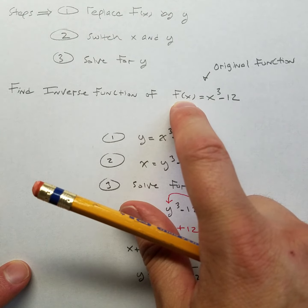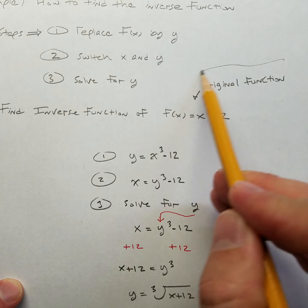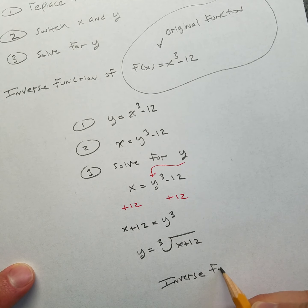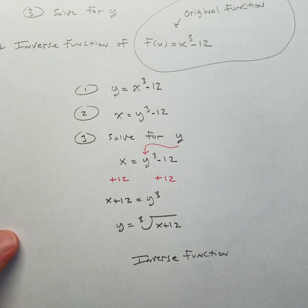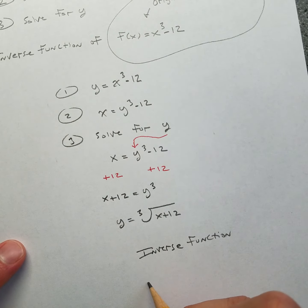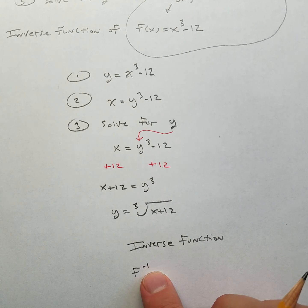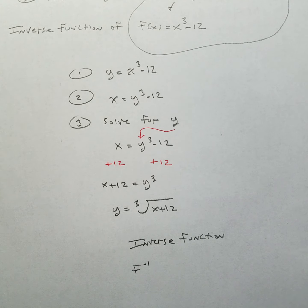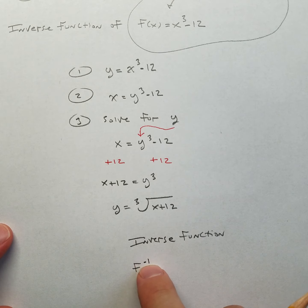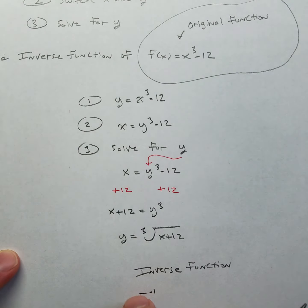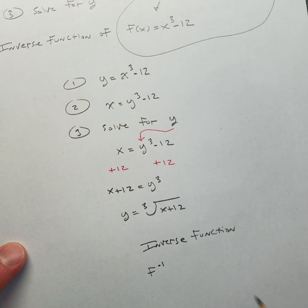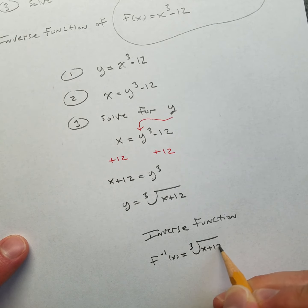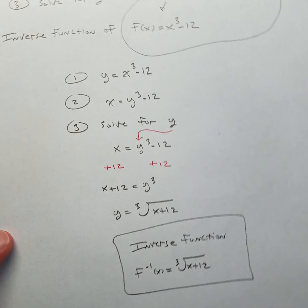We give the inverse a special label to distinguish it from the original. We write f with a negative one — I know that looks like a power, but it is not a power. That's just math notation; nobody's going to change that. All that negative one symbolizes is that it's the inverse. So the inverse function is f⁻¹(x) equals the third root of x plus 12.